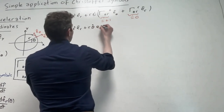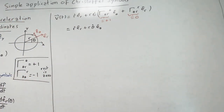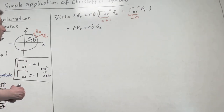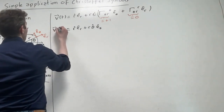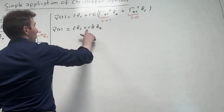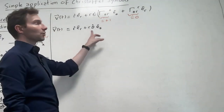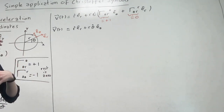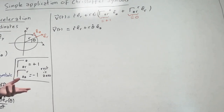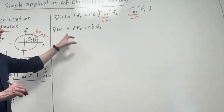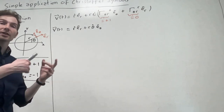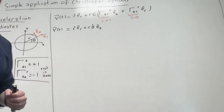So the velocity is r-dot eR plus R theta-dot e_theta. I know some people would say that's obvious, but the goal is to treat it via Christoffel symbols and see how they are used in a simple setting. Notice that the term R*theta-dot*e_theta — what people call R*omega*e_theta — comes from the Christoffel symbols, i.e., from the time and coordinate dependence of the basis vectors.